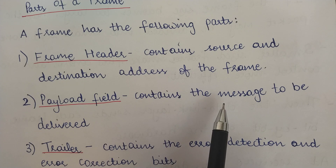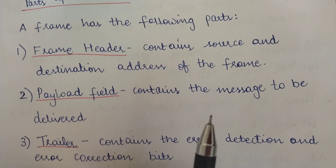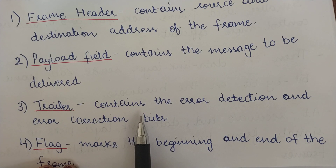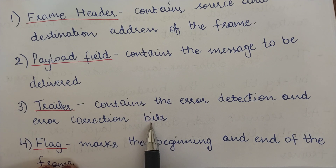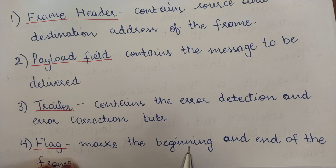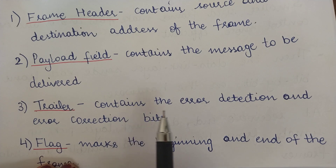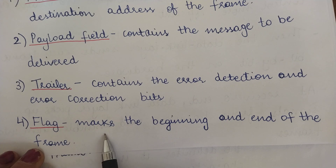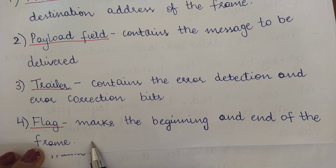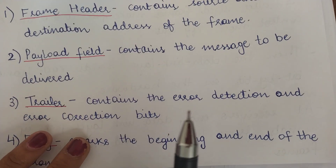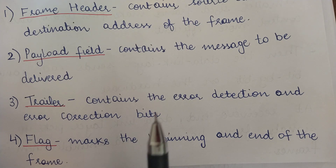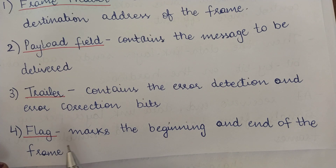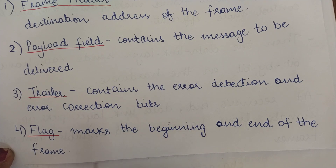The payload field contains the actual data and message to be transmitted. The trailer is at the end of the frame and contains the error detection and error correction bits — special bits used for error correction and detection, which will be discussed in upcoming videos. Additionally, a frame may or may not have an optional flag field. While the header, payload field, and trailer are compulsory in every frame, the flag field is optional. If present, it represents the beginning and end of a frame, helping the receiver distinguish between two different frames.